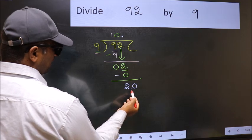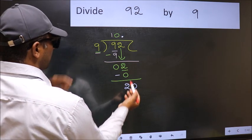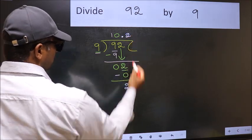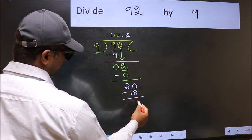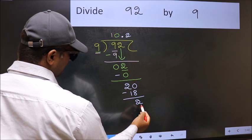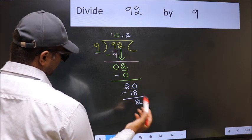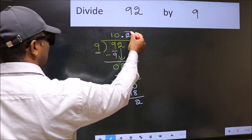So 20. Our number close to 20 in 9 table is 9, 2 is 18. Now you should subtract. You get 2. We got 2 again. That means, you get bar on this number.